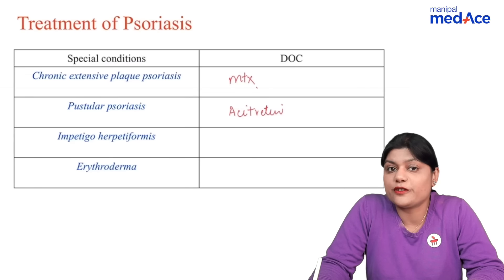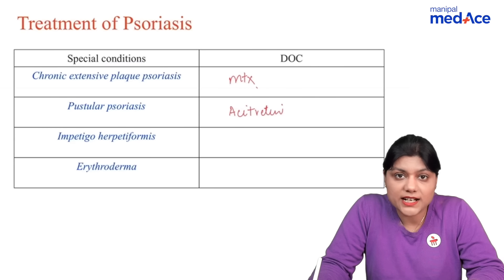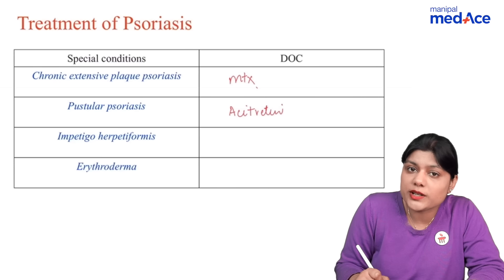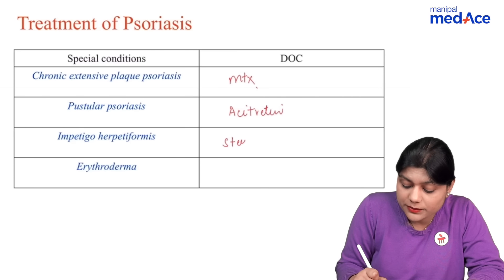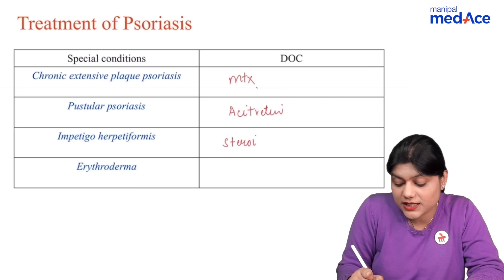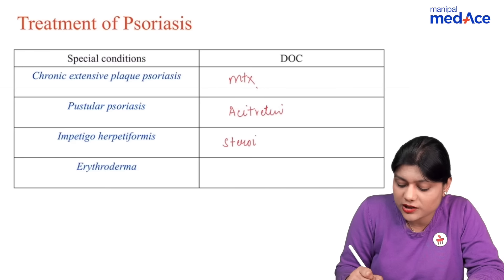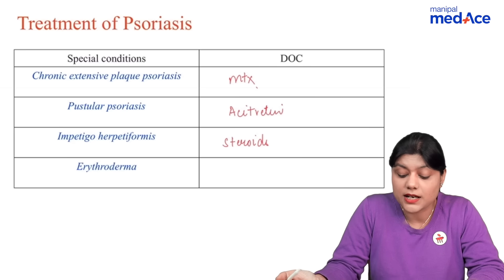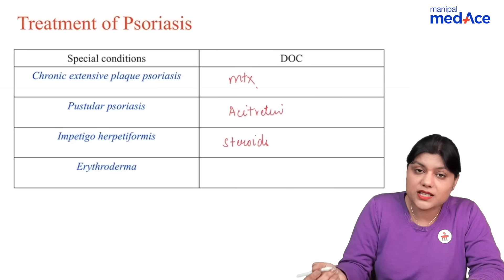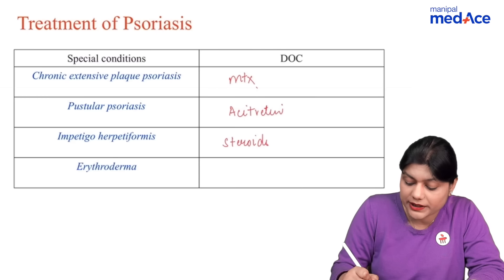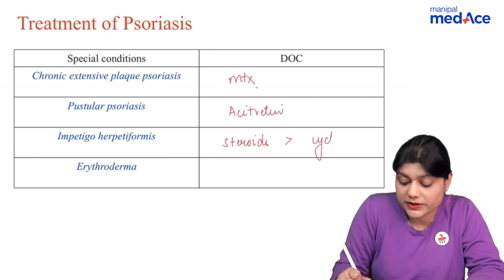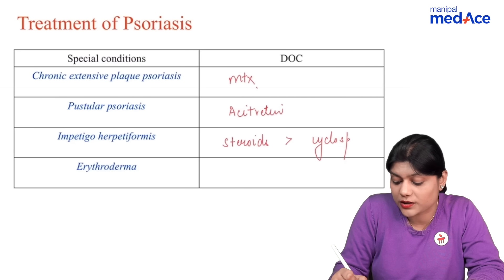Impetigo herpetiformis is psoriasis in pregnant patients, and the drug of choice is steroids. Remember, a patient with psoriasis taking steroids can develop pustular psoriasis, so steroids are contraindicated in psoriasis generally, but they are given in pregnant patients. The second drug of choice is cyclosporine.